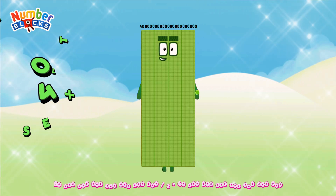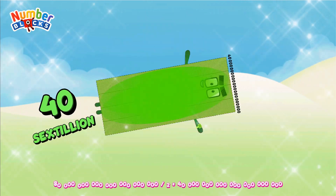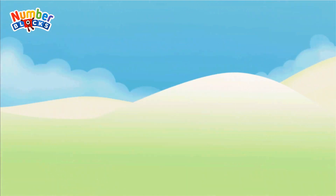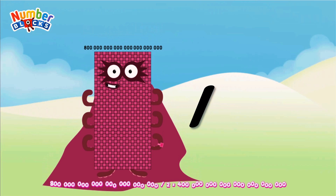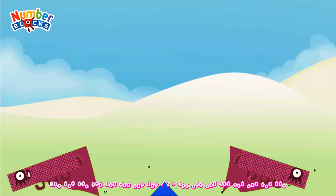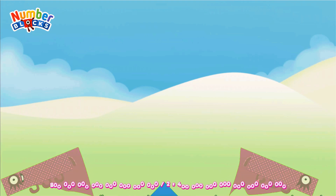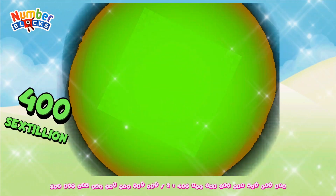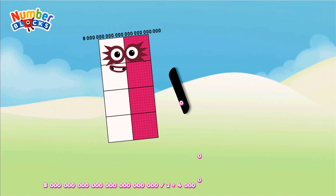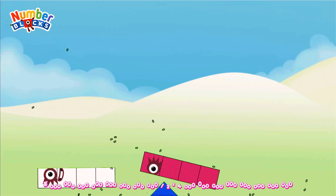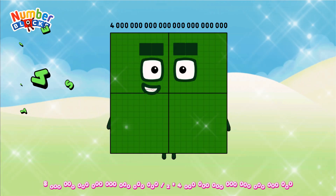Equals forty sextillion. Eight hundred sextillion divided by two equals four hundred sextillion. Eight sextillion divided by two equals a septillion.